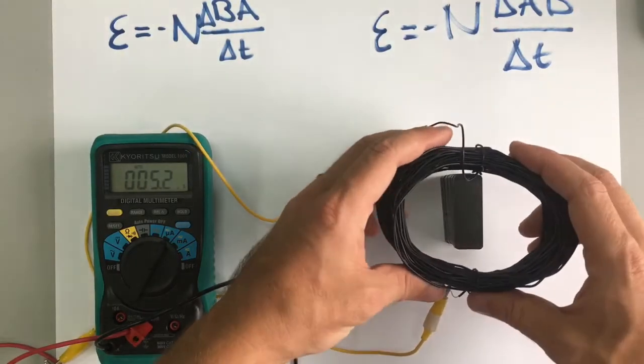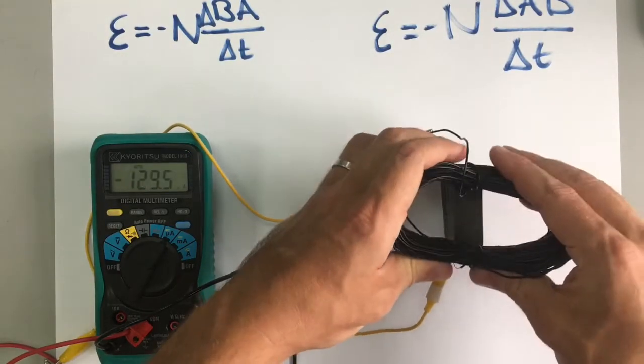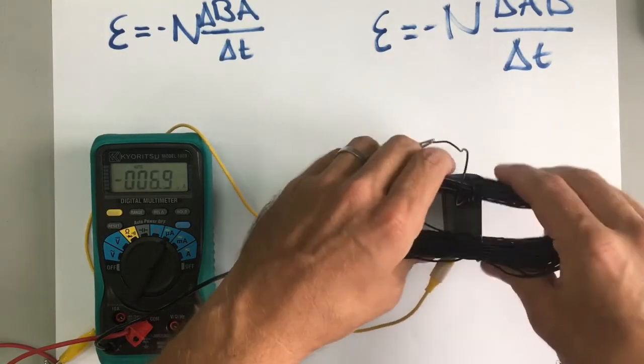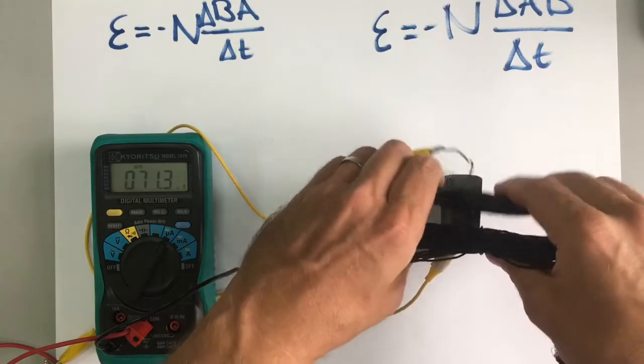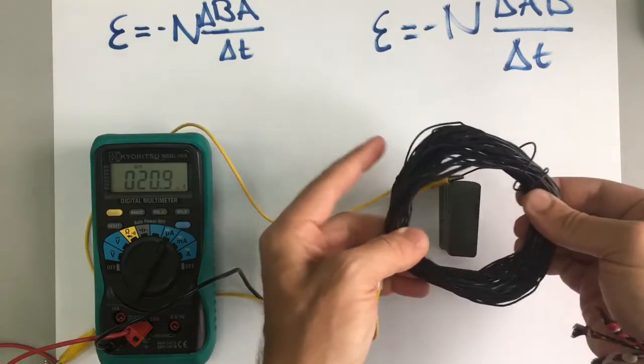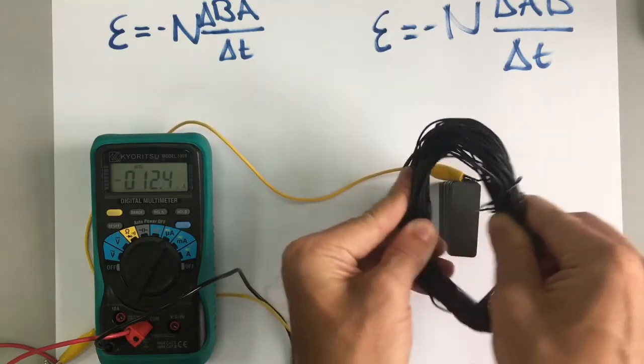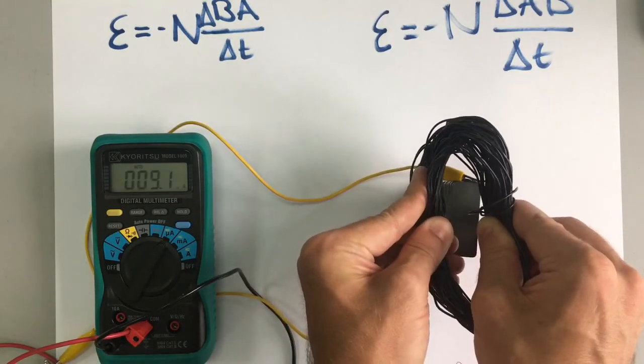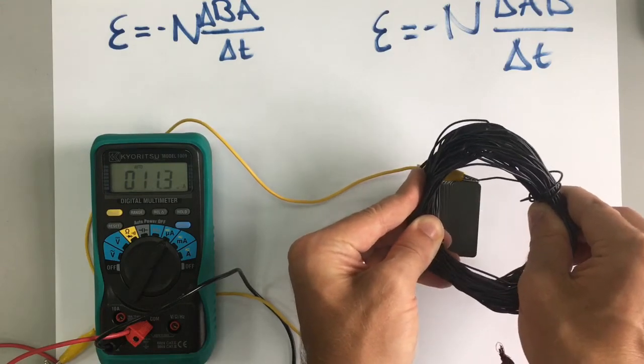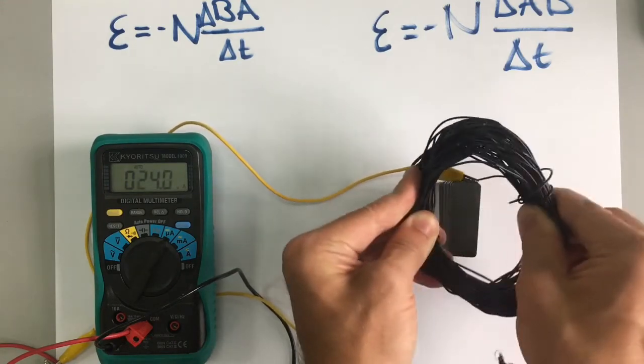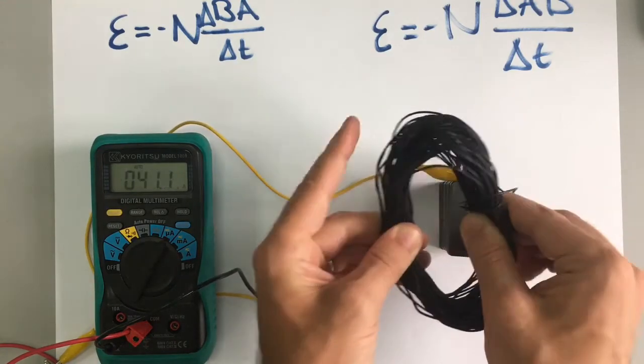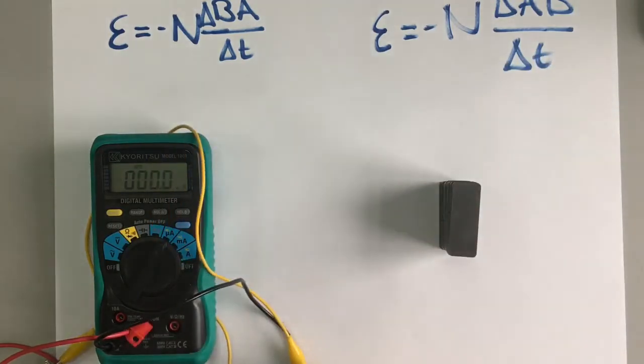So the easiest way to change the area is to just deform the coils like this. I'm changing the area of those circles, and the more I change the area, the more EMF there is. If I change the area slower, then there's a smaller EMF, a smaller current. If I do it quicker, there's a larger EMF and a larger current. So that's the second way.